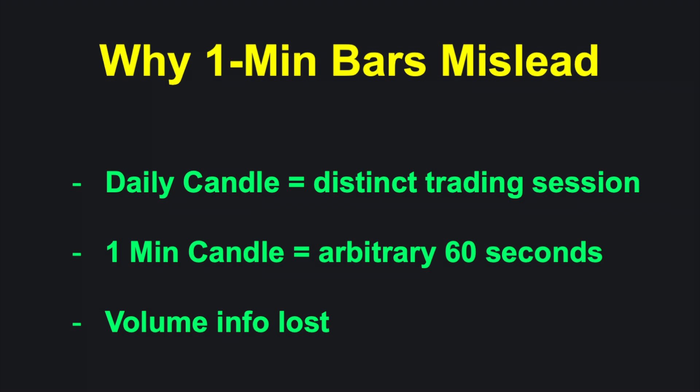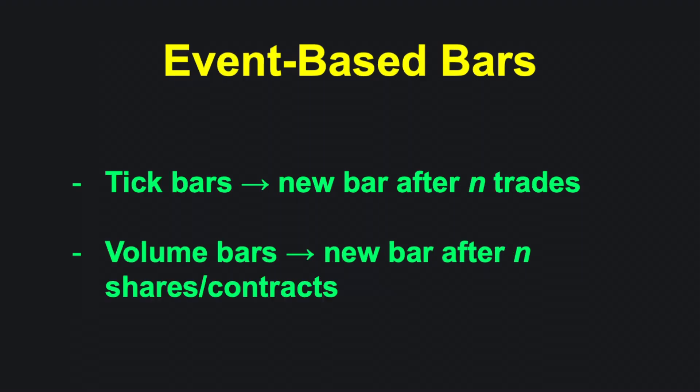To better align bars with market activity, many traders switch to event-based bars — tick charts, which print a new bar after every n number of trades, and volume charts, which print a new bar after every n number of shares or contracts have changed hands, both replacing a fixed time interval with a measure of trading intensity.